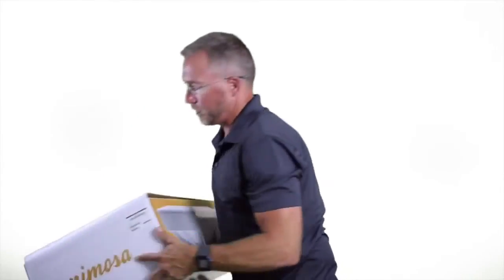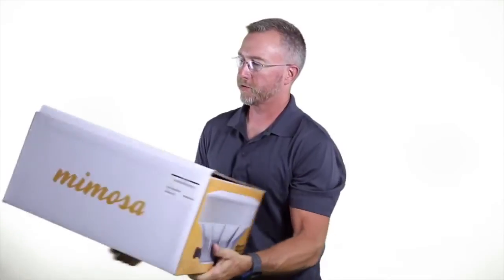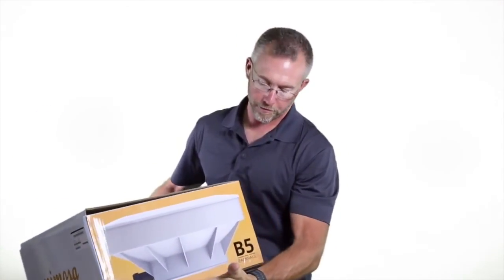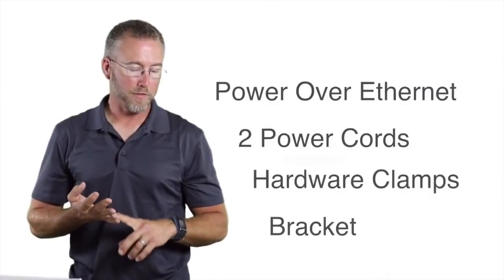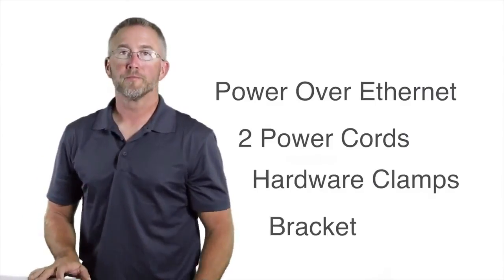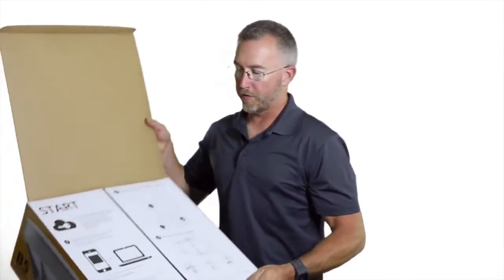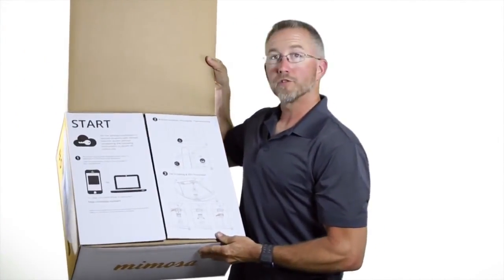So the box that the B5 comes in for shipping is actually not much bigger than the unit itself. Everything required for the installation is in the box. Your power over ethernet, the two power cords, the hardware and the bracket are all included. And there's basic instructions on the inside flap on how to get started.